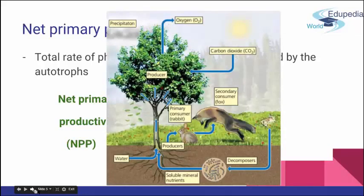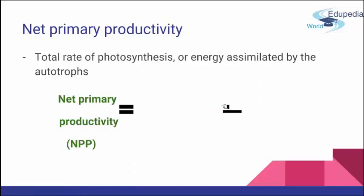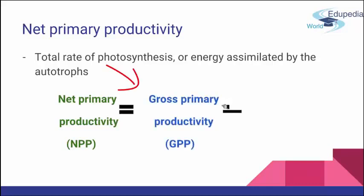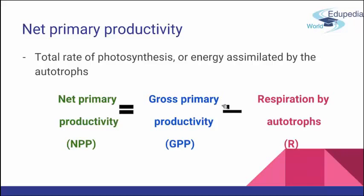This is the idea of a food chain: you have a producer, oxygen as a byproduct, carbon dioxide is taken in, and then you have primary consumers, secondary consumers, decomposers, and so on — matter produced by a plant is sent further along the food chain. We consider something called net primary productivity. The gross primary productivity is the total rate of photosynthesis or energy assimilated by autotrophs — the first level of production and the total amount a plant can produce. When we subtract respiration by autotrophs, we end up with net primary productivity (NPP).